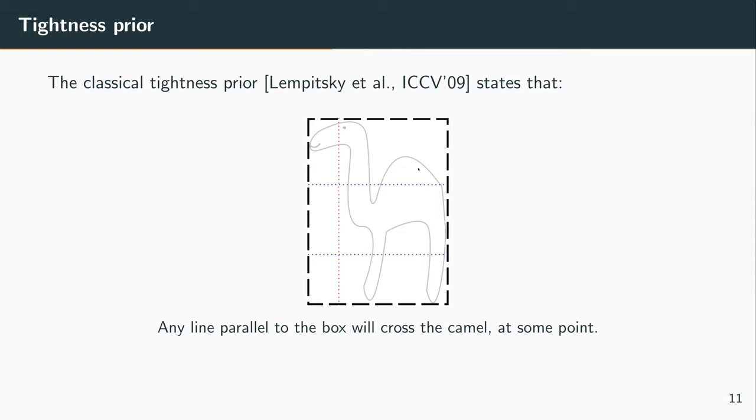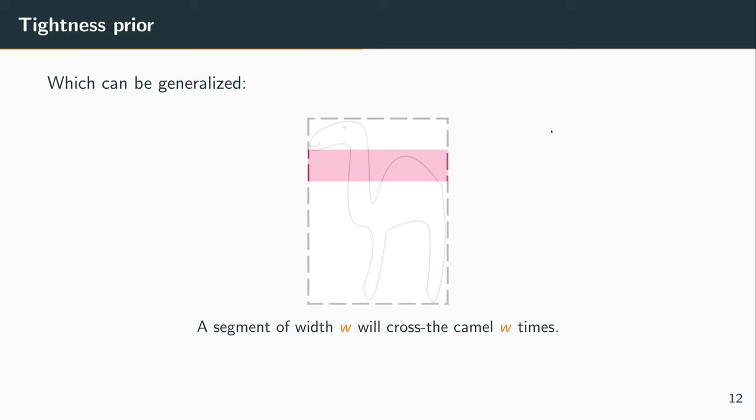if we shifted those blue lines, we will keep crossing some part of the camel at some point. And this is the same for the vertical lines. And we can generalize this tightness prior to a segment of size W, which is a collection of W lines. Then we'll cross the object at least W times.